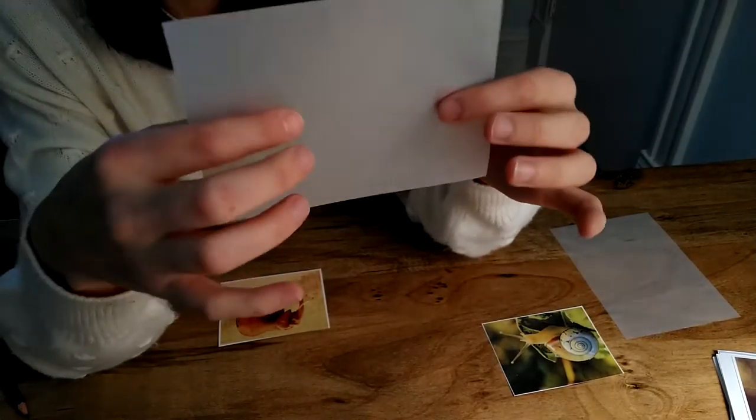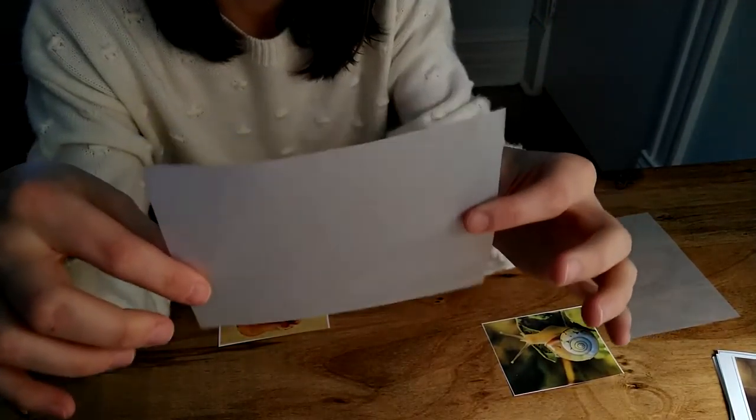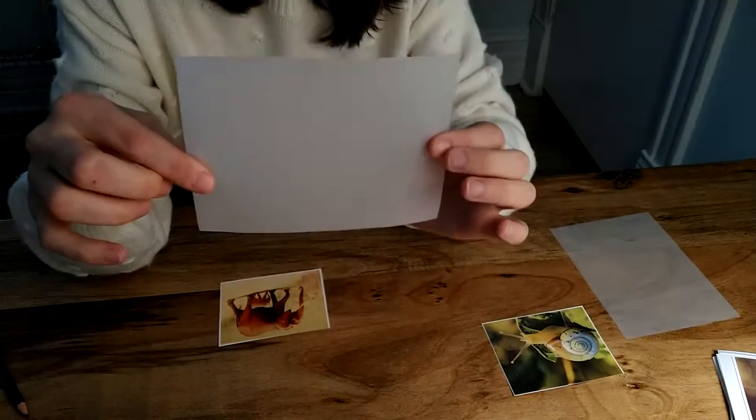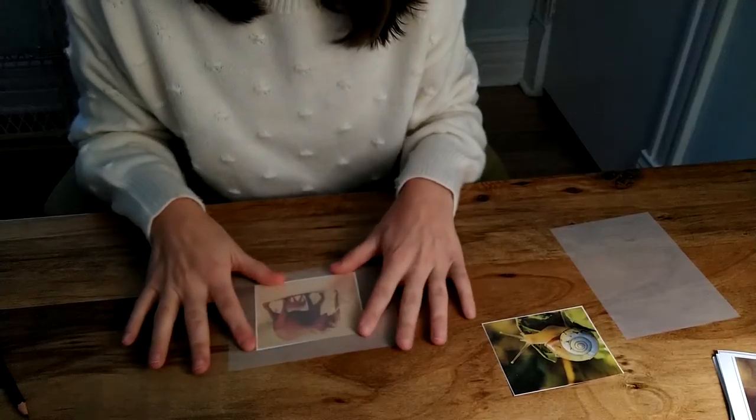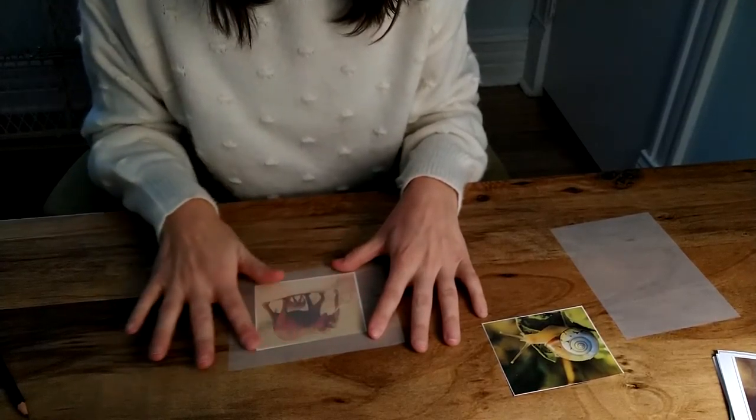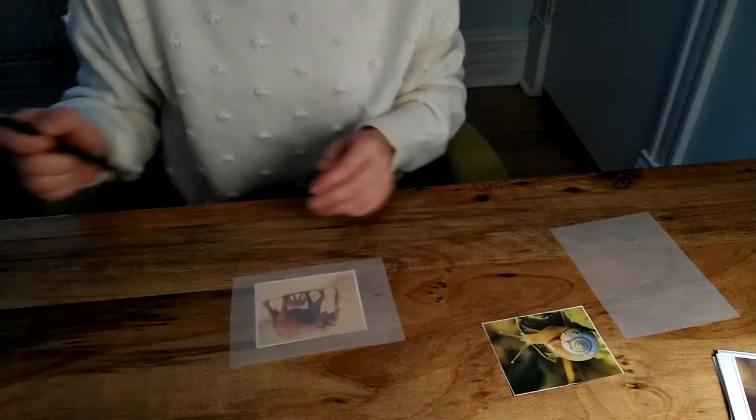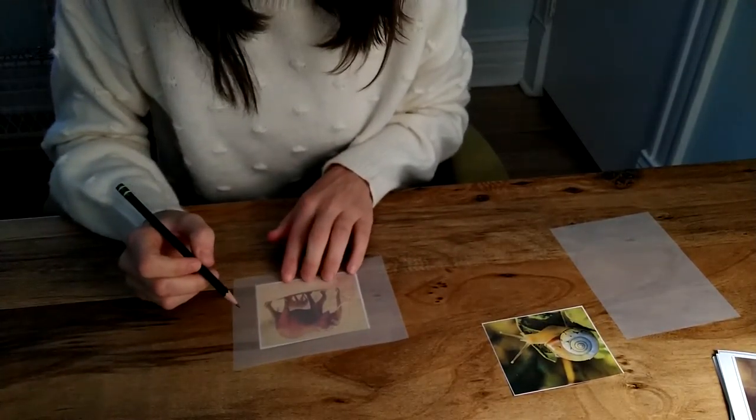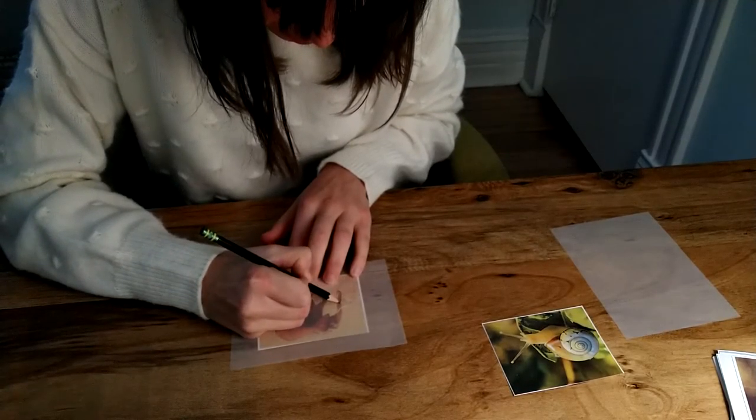That means light can shine through it, but I can't really see anything through it if I put it in front of my eyes. However, when I lay it on the paper, I can see really clearly the picture underneath, and I can trace it.